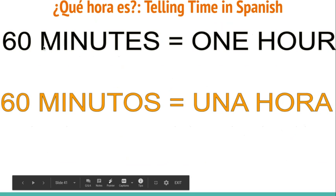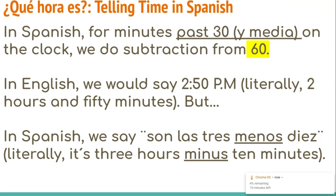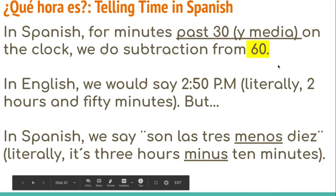An important thing to remember today is that sesenta minutos iguala una hora, or 60 minutes equals one hour. We'll want to hold on to this because we are going to be doing a little bit of subtraction today. Yesterday, for the minutes up to 30, we basically say 'and' and then the number. So when we get past 30 — past y media on the clock — we do some subtraction from 60. Remind me, how many minutes are in an hour? 60, or sesenta.